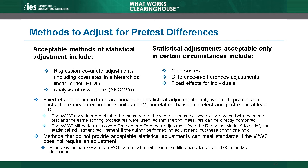For example, consider a QED study in which the author used analysis of variance, a statistical method that does not include an adjustment for the baseline measure, to analyze differences in outcomes between the intervention and comparison groups. Further assume that the WWC found a baseline effect size of .10 standard deviations, which is in the range within which the WWC requires a statistical adjustment. If the pretest and posttest meet the two conditions for the WWC to consider difference-in-differences an acceptable statistical adjustment, then the WWC could apply its own difference-in-differences adjustment to the results of the analysis of variance, and the study would be eligible to be rated meets WWC group design standards with reservations.